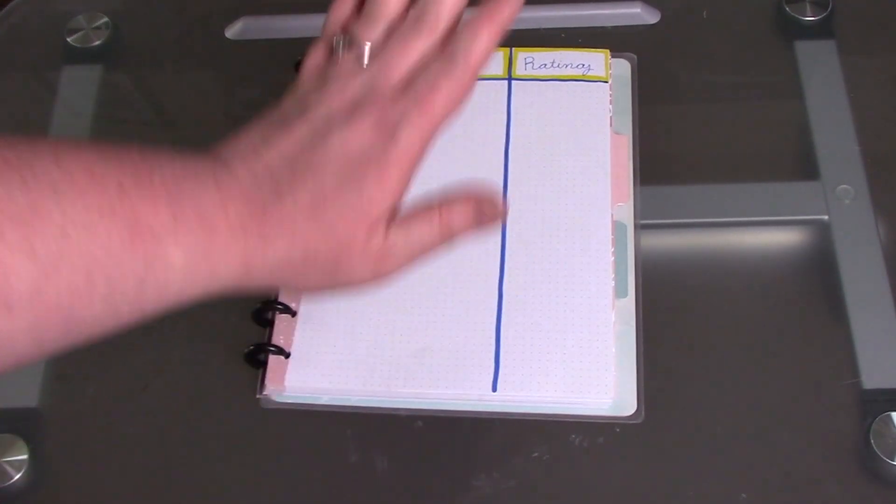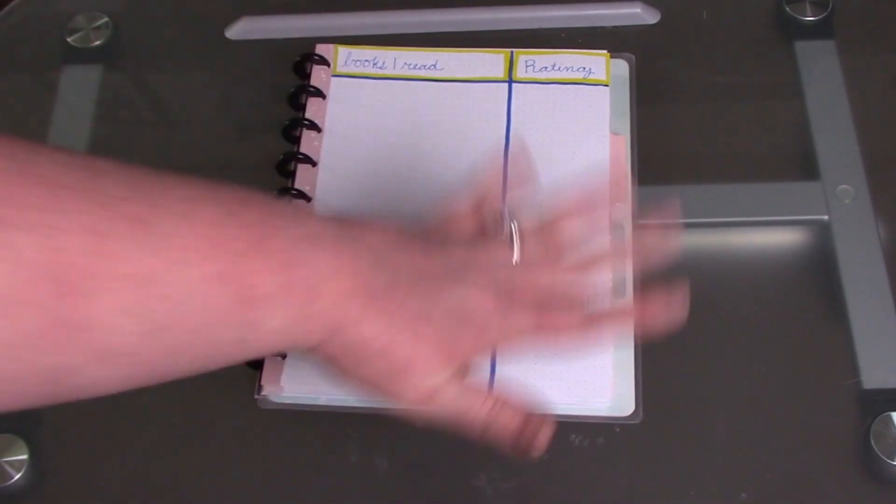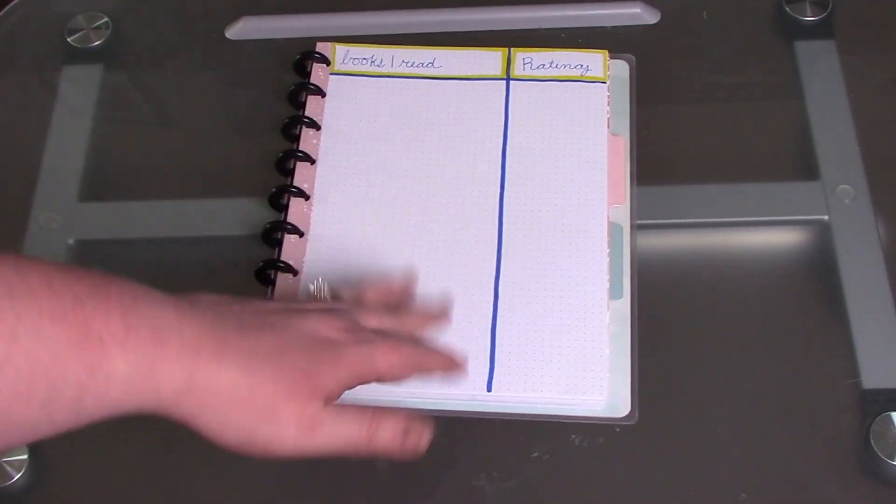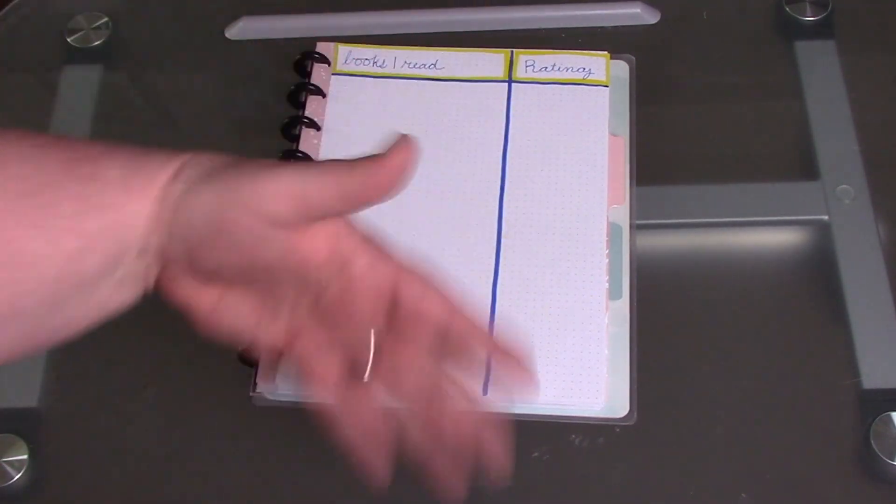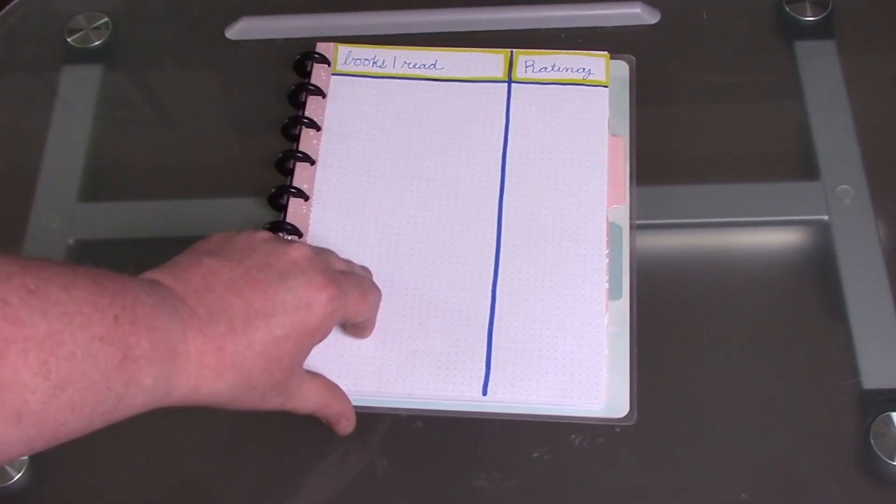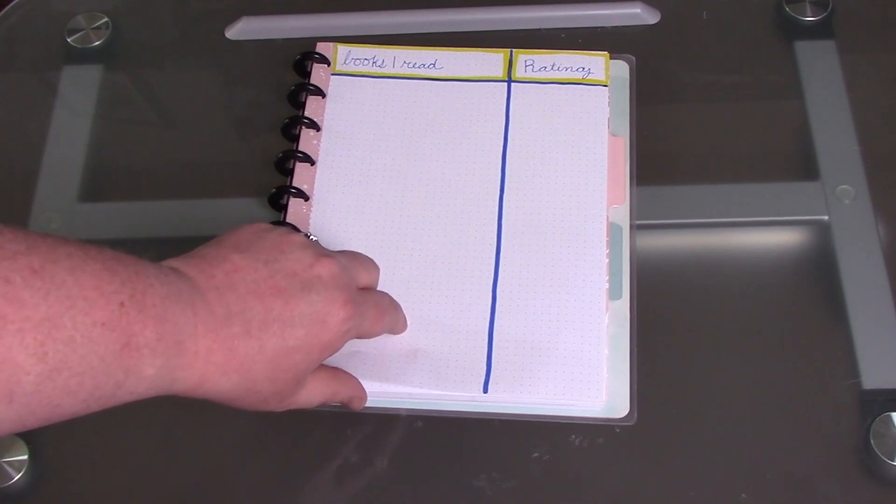I tend to be a more paper-tactile kind of person as opposed to a digital one, so this is where I can make sure that I've gone to Goodreads and filled things in. I wasn't very good about that the latter half of the year, but I wasn't really using my bullet journal either.